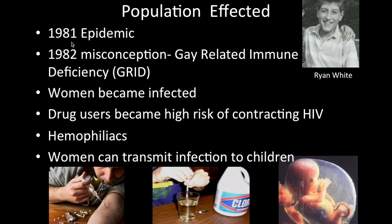In 1981, the population was affected by this epidemic and no one knew what caused this phenomenon. In 1982 there were misconceptions — the scientific community believed this condition only arose in gay men, coining the term 'gay-related immune deficiency' (GRID). This was later disproved as a misconception when women also became infected with HIV, because the infection can be transmitted through sexual intercourse.